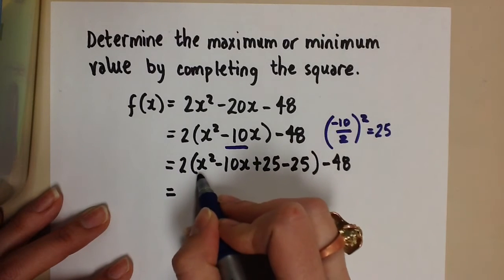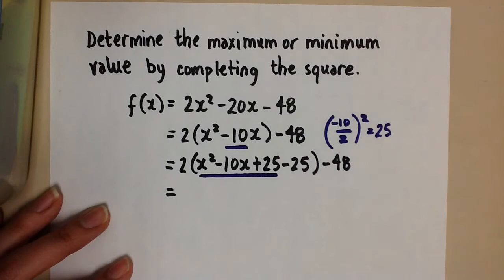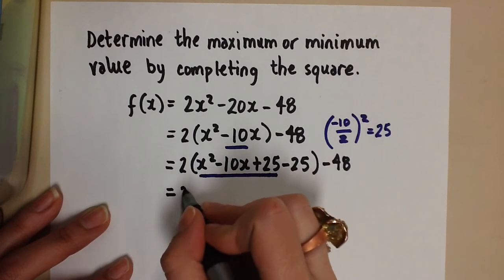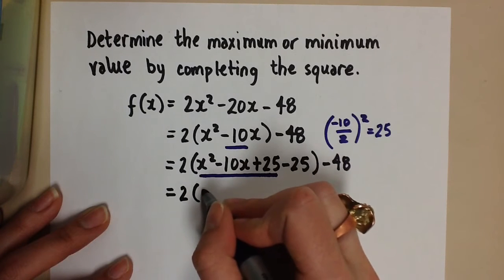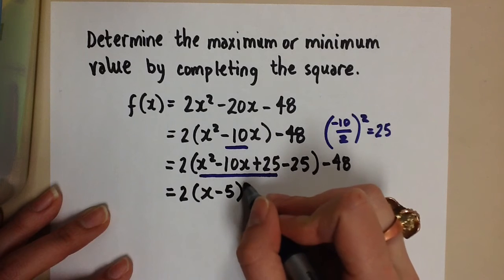So now we have this simple trinomial in the middle here that is a perfect square. So when we factor that, our factor is going to be x minus 5 squared.